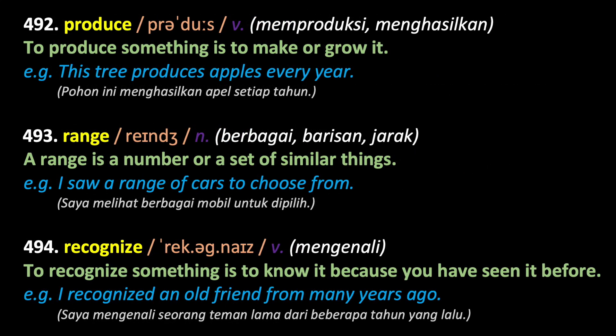Produce — to produce something is to make or grow it. This tree produces apples every year. Range — a range is a number or a set of similar things. I saw a range of cars to choose from.